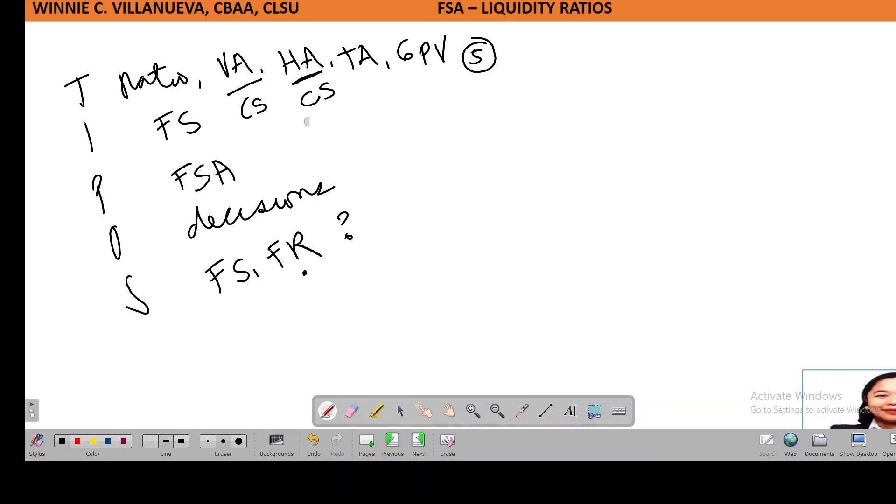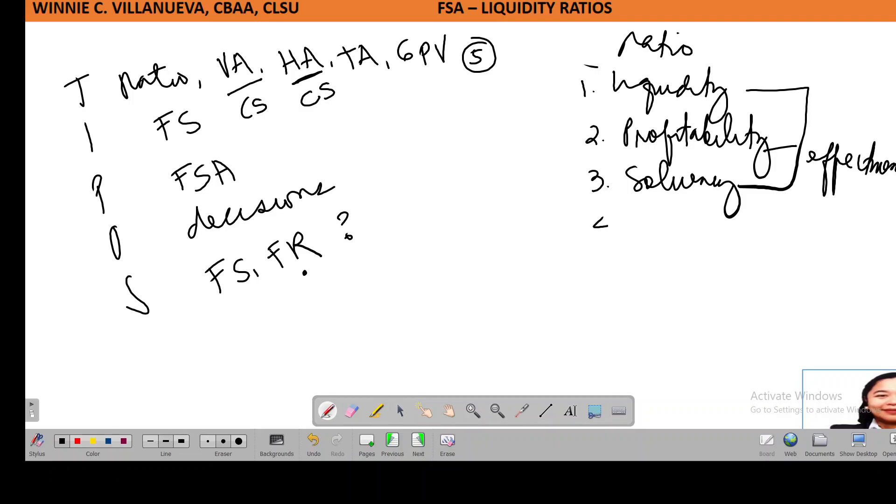Let's start with the ratios. If it is ratio analysis, how many do we have? We will start with liquidity, and then profitability. After profitability, we'll go to solvency. Why are we going to start with these three? These are indicators of effectiveness. And then we have efficiency ratio and the market valuation ratio.